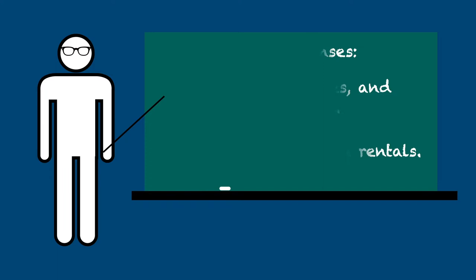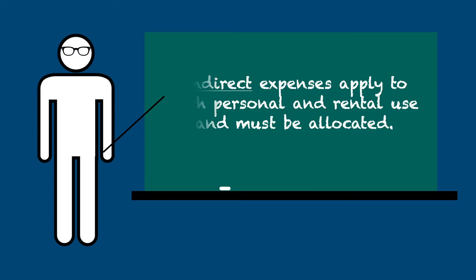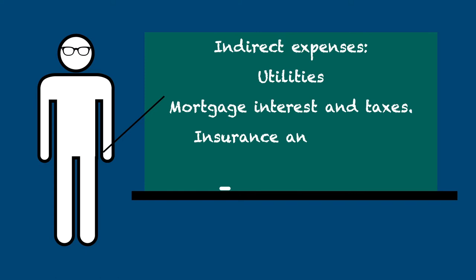All other expenses are indirect expenses, which are expenses that apply to both rental and personal use. Examples of this are utilities, mortgage interest and property taxes, insurance and repairs, and depreciation.